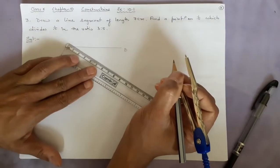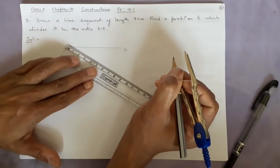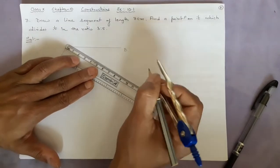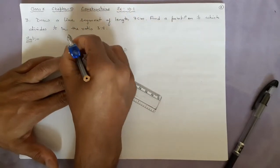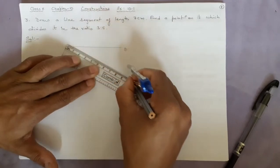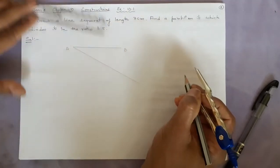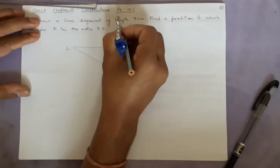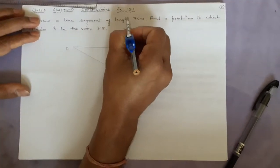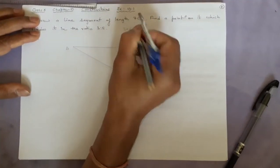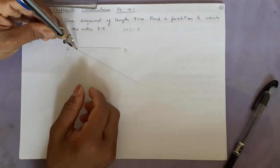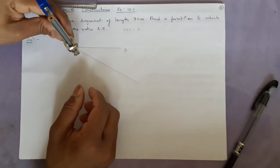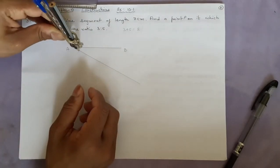Now make any type of acute angle — any angle you can use. Here, how many divisions? 3 plus 5 equals 8.